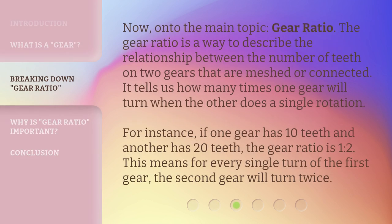Now, onto the main topic: gear ratio. The gear ratio is a way to describe the relationship between the number of teeth on two gears that are meshed or connected. It tells us how many times one gear will turn when the other does a single rotation. For instance, if one gear has 10 teeth and another has 20 teeth, the gear ratio is 1 to 2. This means for every single turn of the first gear, the second gear will turn twice.